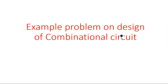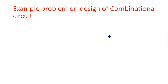Hi everyone. In this video I am going to explain an example problem on design of a combinational circuit. The design of a combinational circuit always consists of three steps: truth table, K-maps, and then logic circuit.